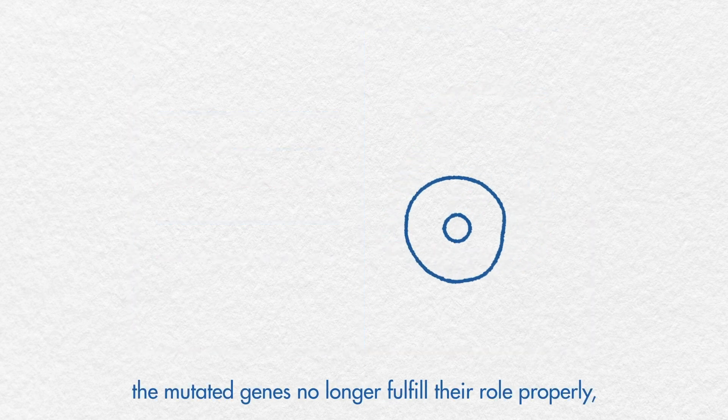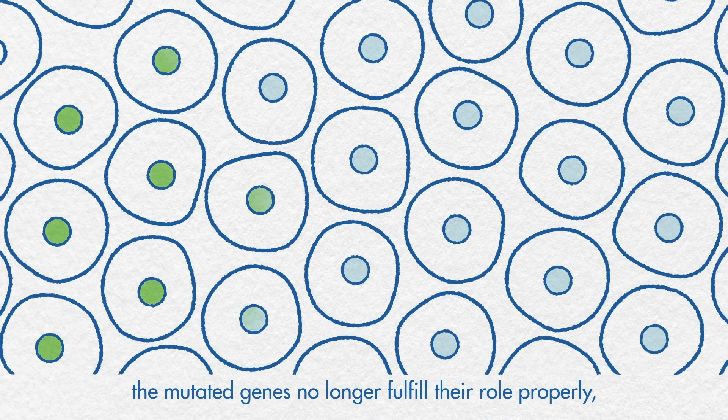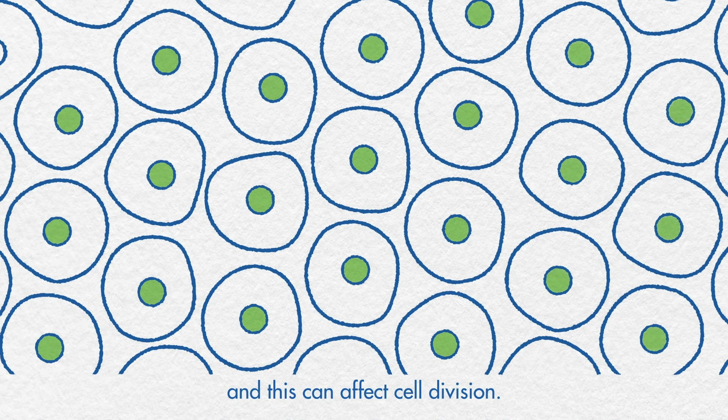In other words, the mutated genes no longer fulfill their role properly, and this can affect cell division.